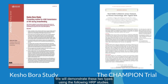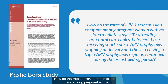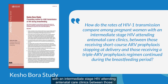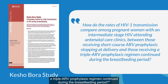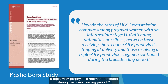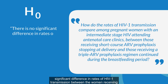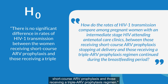We will demonstrate these two types using the following HRP studies. The first example demonstrates how the superiority hypothesis was formulated from HRP's Keshobora study, whose research question was: How do the rates of HIV-1 transmission compare among pregnant women with an intermediate-stage HIV attending antenatal care clinics, between those receiving short-course ARV prophylaxis stopping at delivery and those receiving a triple ARV prophylaxis regimen continued during the breastfeeding period? Based on this research question, the null hypothesis, H0, would be: There is no significant difference in rates of HIV-1 transmission between the women receiving short-course ARV prophylaxis and those receiving a triple ARV prophylaxis regimen.